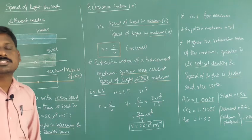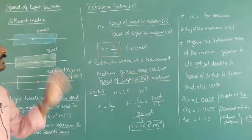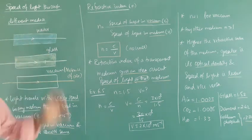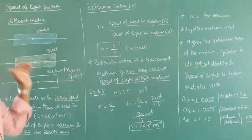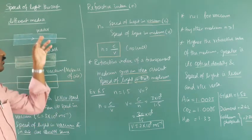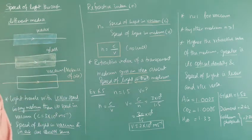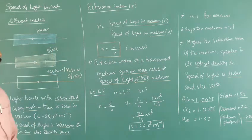Good morning students. In this class we are going to discuss the board — speed of light in different media. Light travels through different media such as water and glass, and its speed is somewhat reduced in those media.